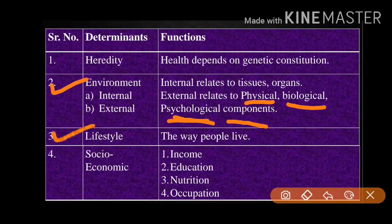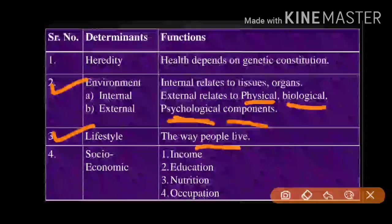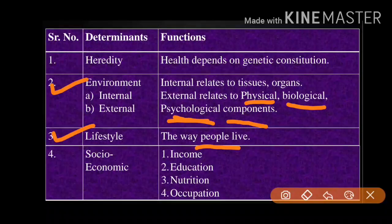The third determinant is lifestyle — the way people live determines whether a person is healthy or not. People who are dependent on alcohol or are smokers will never be truly healthy. On the other hand, if a person regularly walks, exercises, meditates, and does yoga, they will reduce the risk of cancer, diabetes, or heart disease.